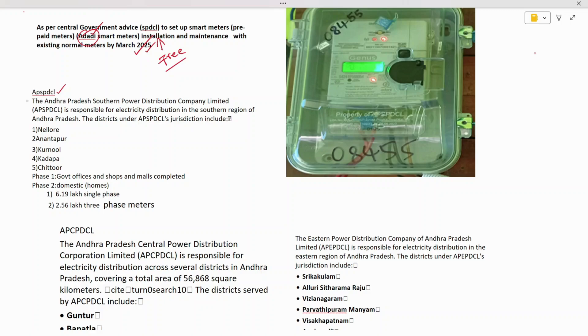First, AP SPDCL includes Palnadu, Anantapur district, Kurnool district, Kadapa, and Chittoor. Here, 6.19 lakh single-phase smart meters have been distributed and are in the process of installation, and 2.56 lakh three-phase meters are in the process of installation.